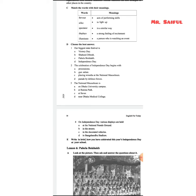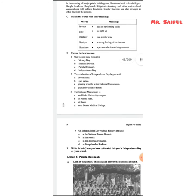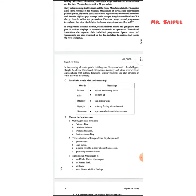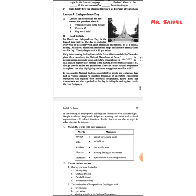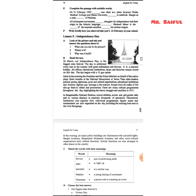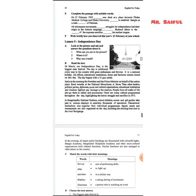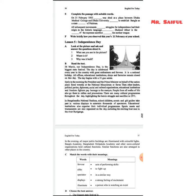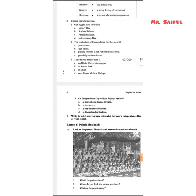Question four: on Independence Day, various displays are held — at the national parade ground, in the streets, in the dock with decorated vehicles, or in Bangabandhu Stadium? The answer is D, Bangabandhu Stadium, as the text mentions various displays to entertain thousands of spectators there.